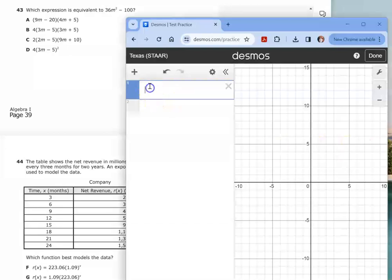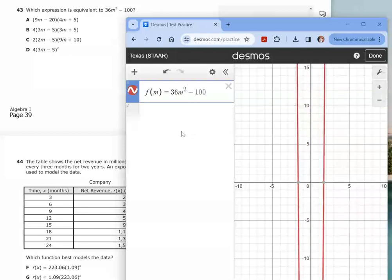So I'm going to call this F of M. And then I'm going to type in the original expression, 3M squared minus 100. This way students don't have to change the variable M to X and then worry about messing it up. Use the same variable and just call it a function of M. They can barely see this graph, but this probably is going to work.